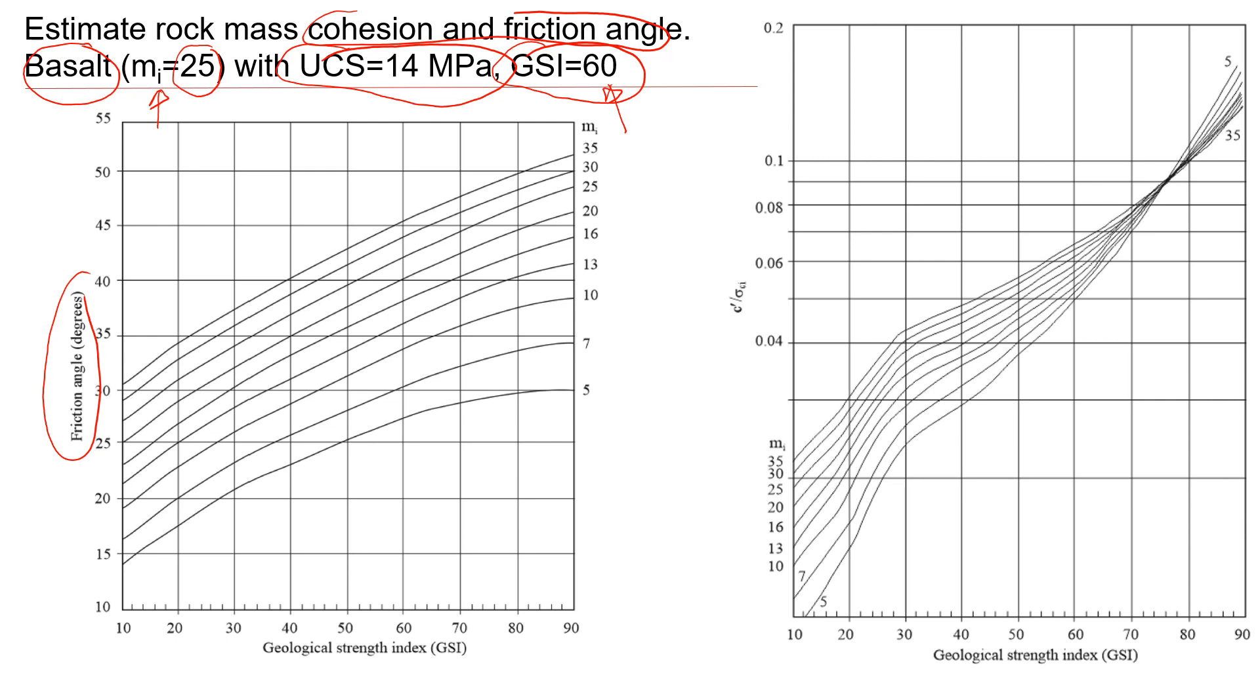So let's look at how we can estimate friction angle. We're going to look at this chart and we'll start with a geological strength index. It's here, 60. And then here you see this value of mi. So basalt in general is actually very hard rock. That's why it has a high value of mi. It's here. So it goes this way. So you see where this line of 25 mi crosses 60, and that will give us a relatively high value of maybe 41.